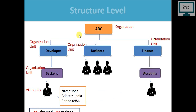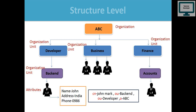The first level is Organization, the next level is Organization Unit. If you have a sub-unit, that is also an Organization Unit. After that we have people, and the attributes of a person are at the last level. So the hierarchy from top to bottom is: Organization → Organization Unit → Organization Unit (sub) → Attributes. Now, suppose I want to get information about a person named John. His common name is John Mark and he belongs to the Organization Unit: Backend.